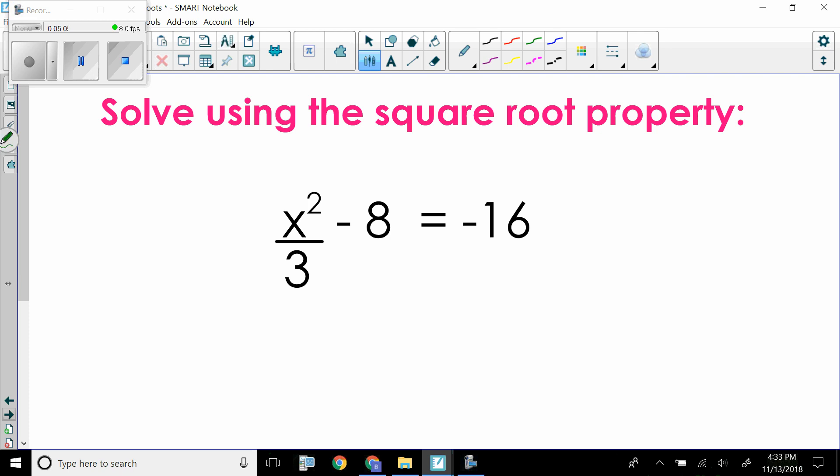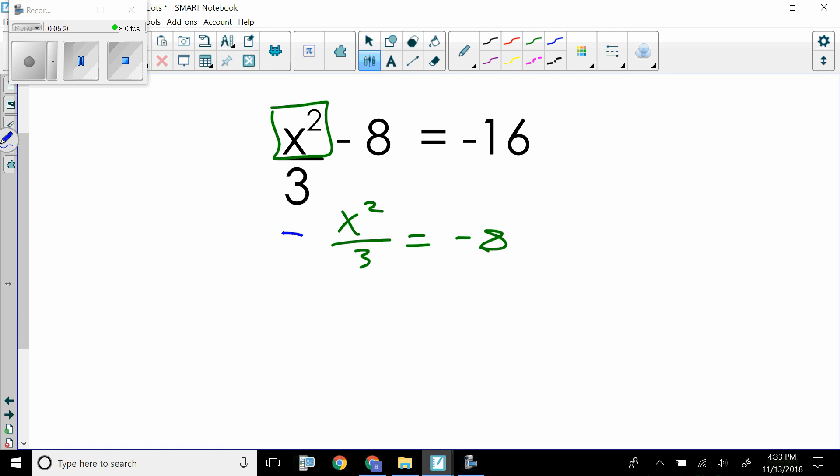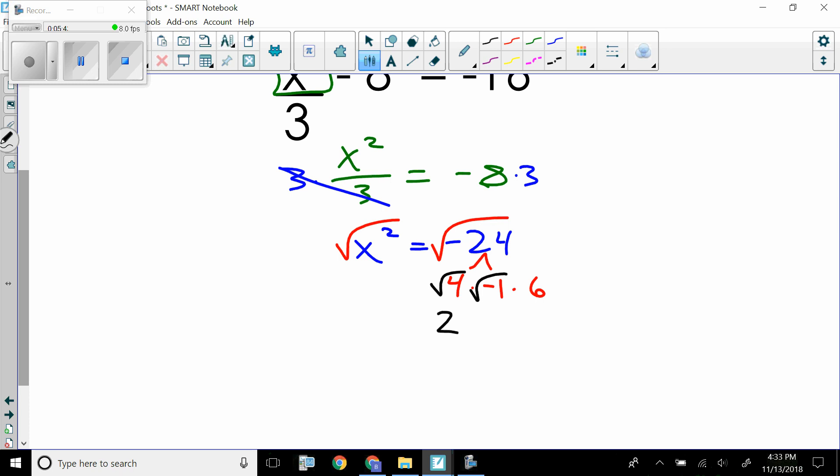Now that you've got a second to try that one out, this is the term I need to get alone. First thing I should do is add 8. If I add 8, I would have a negative 8 over here. Then I need to multiply it through by 3. If I multiply by 3 on this side, it will cancel those. If I multiply by 3 over here, I get x squared equals negative 24. Draw my radical. Split. 24. I think that's what it's for. Negative 1 and 6.